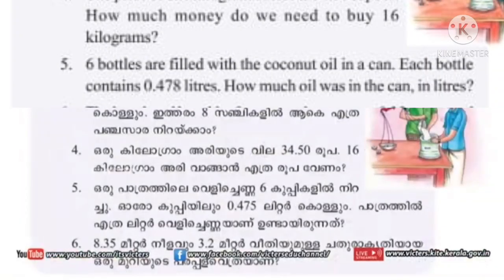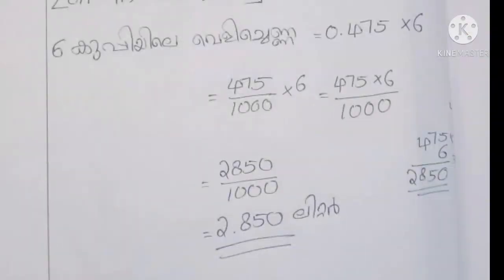Let's do the next problem. 6 bottles are filled with coconut oil from a can. Each bottle contains 0.478 liters. How much oil was in the can in liters? In total, you will have 6 cups — 6 bottles of 0.478 liters each. Now we have to calculate how many liters in total. We have to add 6 times. Because we have to add 6 liters — that is 4.5 liters total approximately.